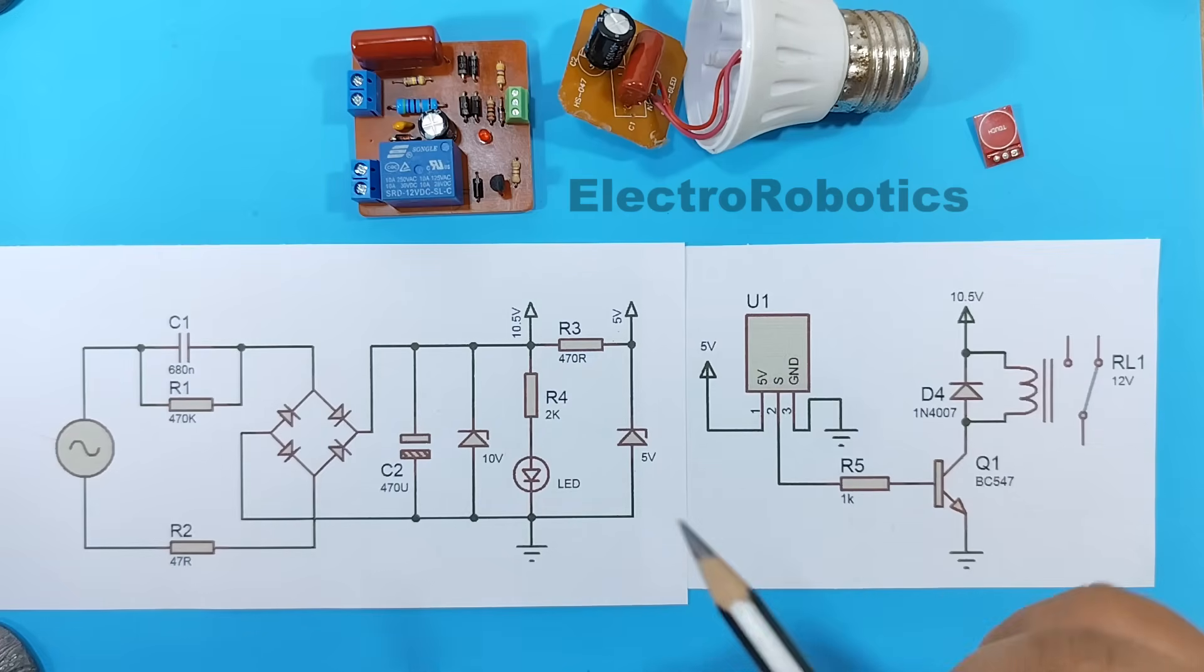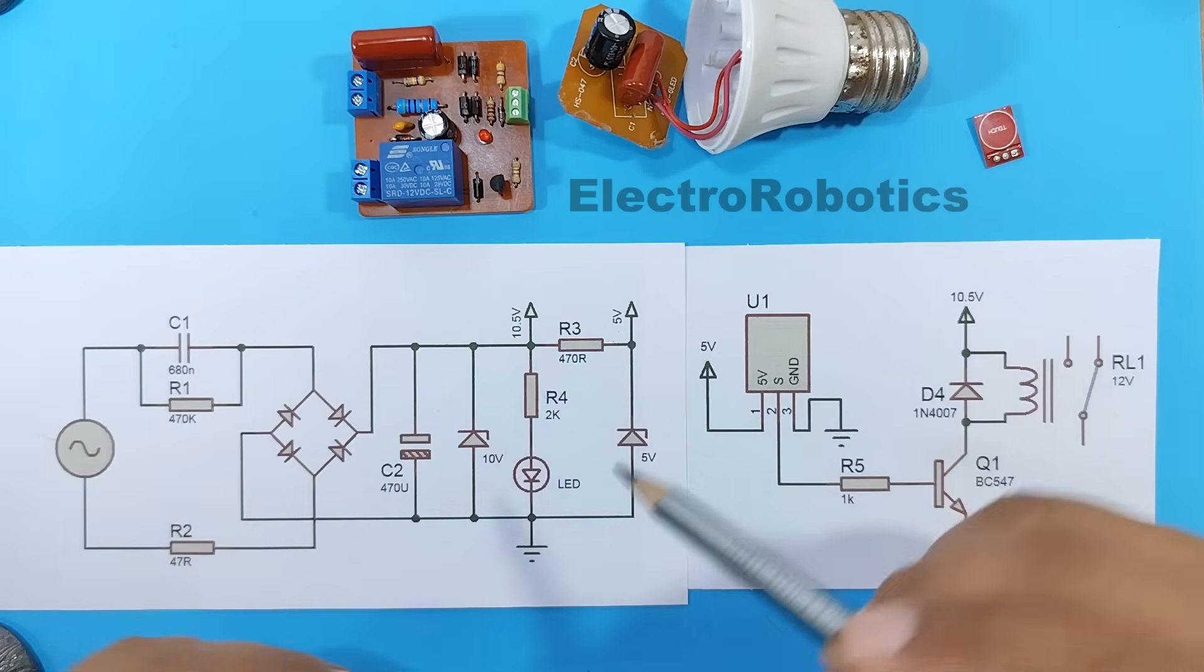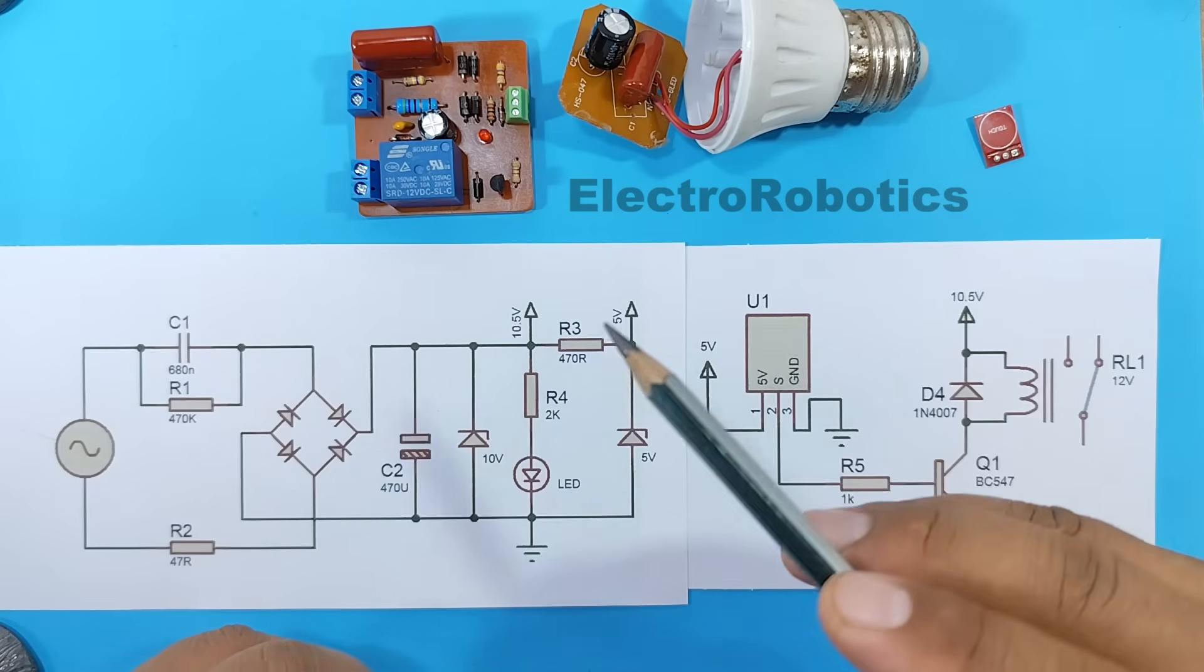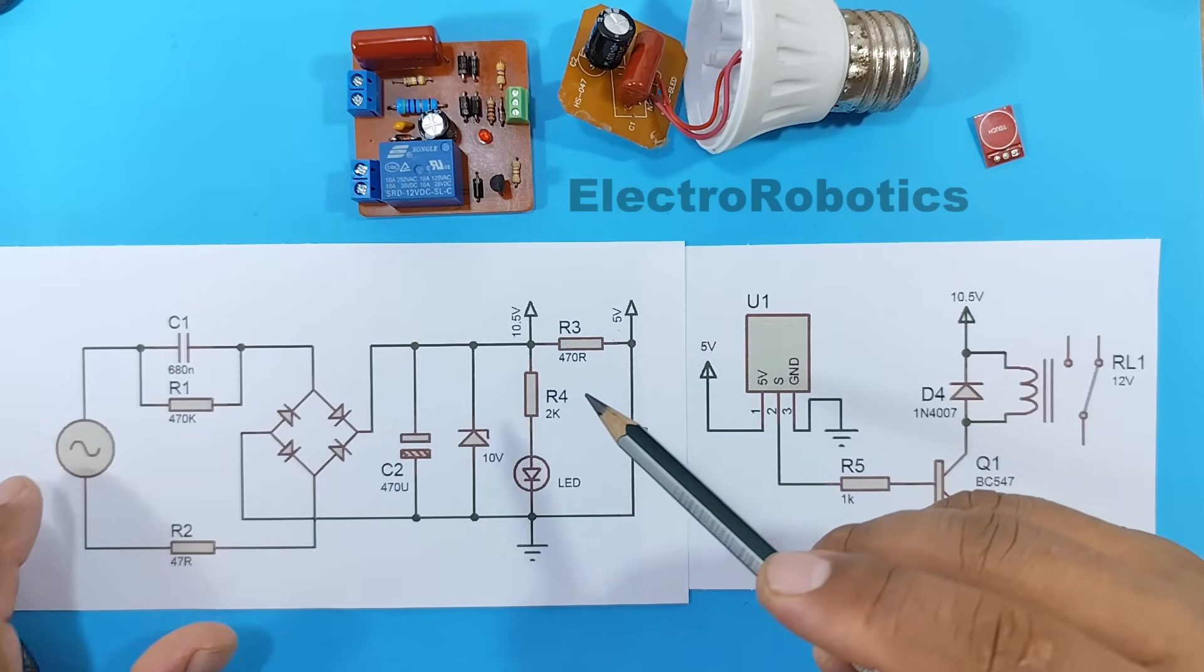This is how our power supply works. But keep in mind that the board's power consumption is approximately 50 milliamps. Therefore, the power consumption if we use a 220-volt power supply would be 11 watts.